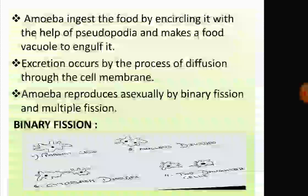In asexual reproduction, a single organism or cell makes a copy of itself. In binary fission, a single Amoeba divides to form two daughter Amoebas. Under favorable conditions, the nucleus divides first, followed by cytoplasmic division, resulting in two daughter cells. As shown in the figure, from one Amoeba, two Amoebas are formed.